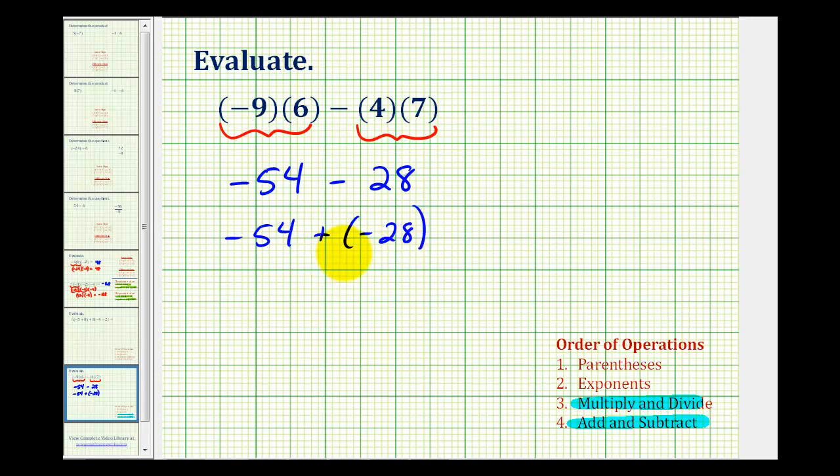And then follow the rules for adding integers. Notice how the integers have the same sign. So we'll add their absolute values and keep the original sign. So the sum will be negative. And then we'll sum their absolute values, 54 plus 28.